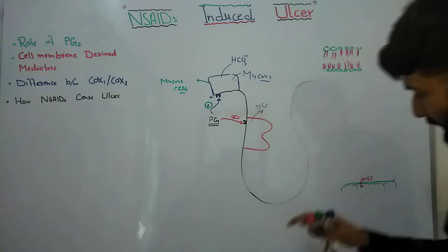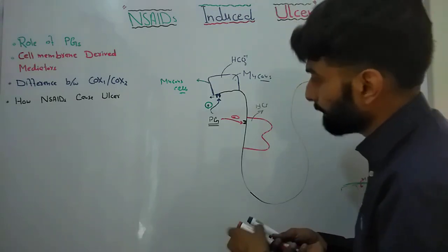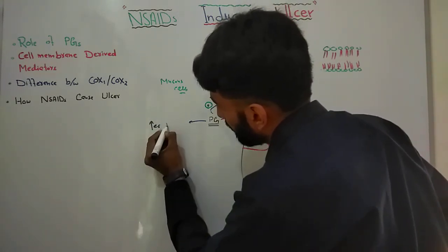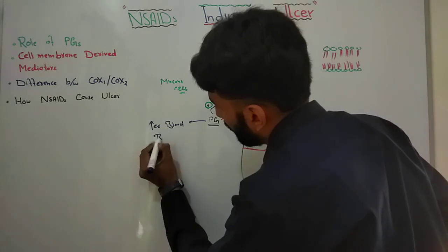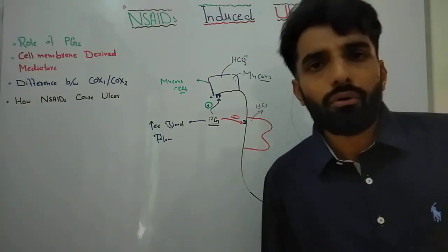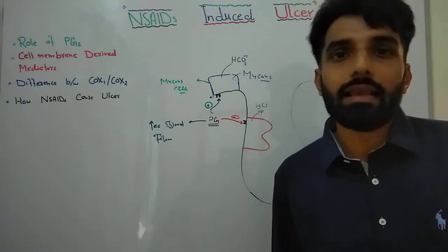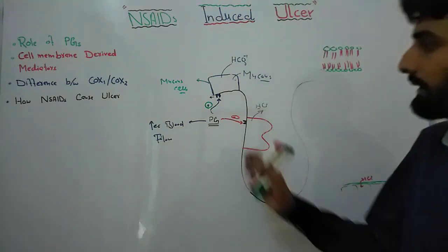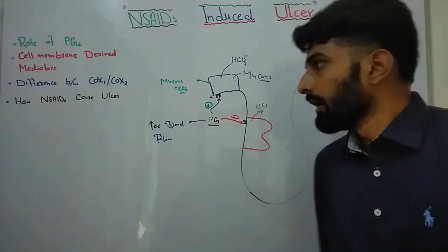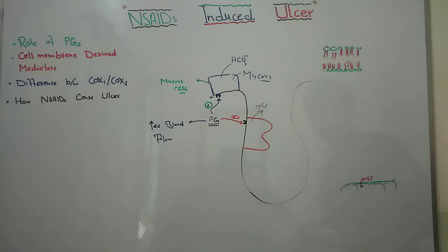Another very important role of prostaglandins is that they increase blood flow toward the GIT and stomach wall. When blood flow increases, obviously the process of regeneration and healing of the damaged area will also increase. So they play a protective role by increasing blood flow in the submucosa of the GIT.